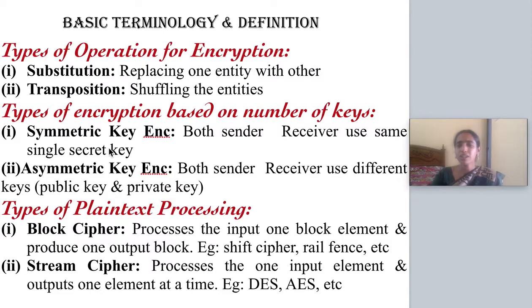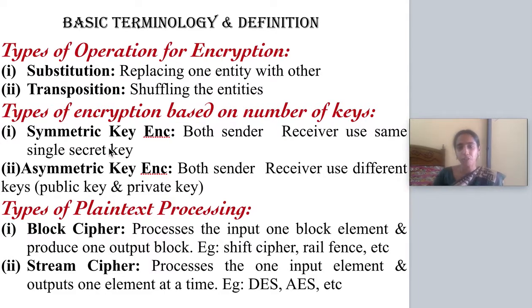Next, what are the types of encryption operations? The encryption can be divided into various categories. Based on type of operation, you can divide the encryption scheme into substitution and transposition. Substitution means instead of one element you replace it with another element. Transposition is like the school exercise of rearranging a jumbled sentence — all the message elements are there but in a jumbled or shuffled format. That is called transposition.